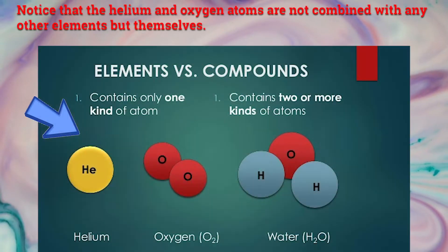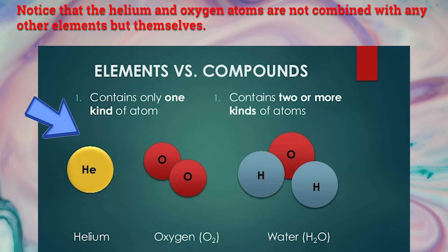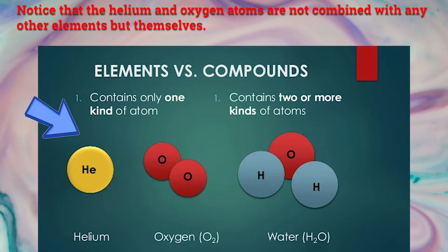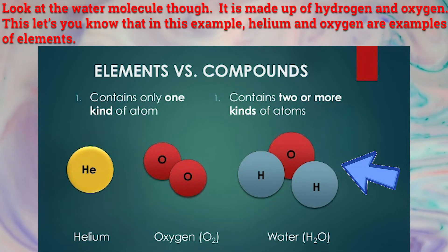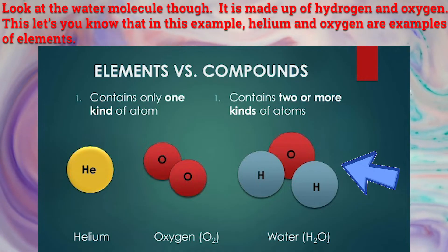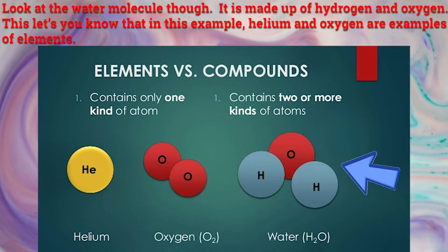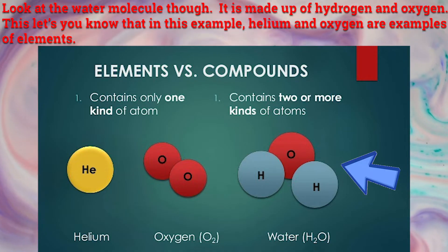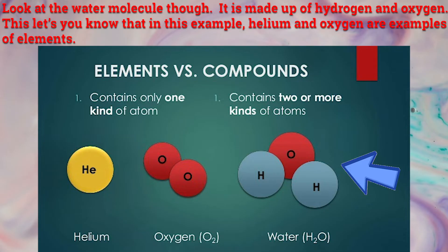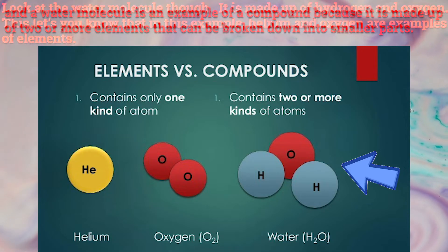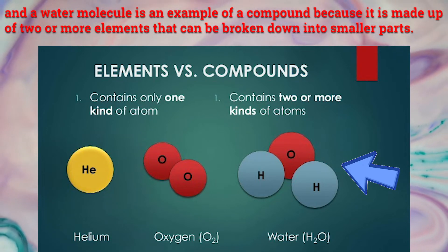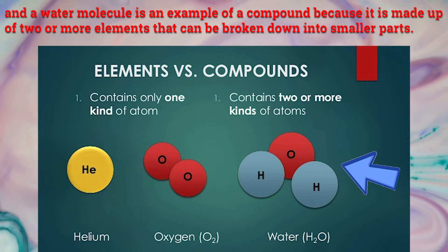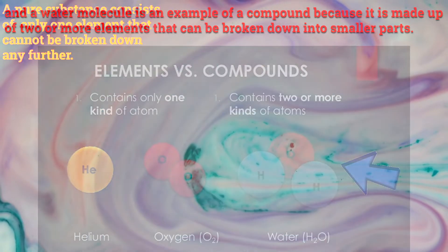Look at the following diagram. Notice that the helium and oxygen atoms are not combined with any other elements but themselves. Look at the water molecule though — it is made up of hydrogen and oxygen. This lets you know that in this example, helium and oxygen are samples of elements, and the water molecule is a sample of a compound because it is made up of two or more elements that can be broken down into smaller parts.